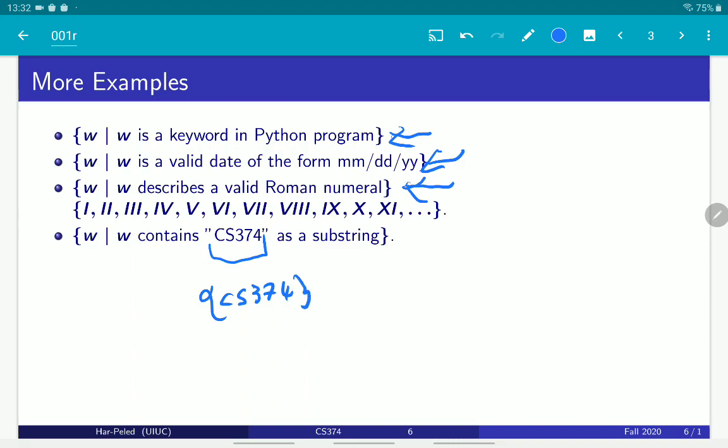Then you can concatenate it with sigma star and sigma star. Sigma star, to remind you, is the set of all strings, which is regular by definition, because sigma is a finite language—just the different letters in the alphabet—and then you take the star, so the Kleene star.